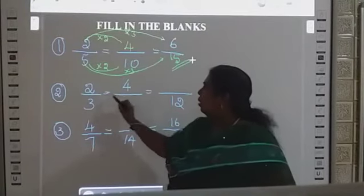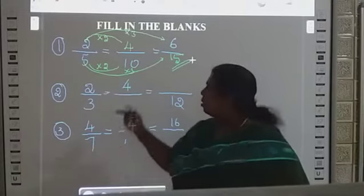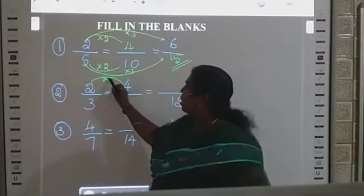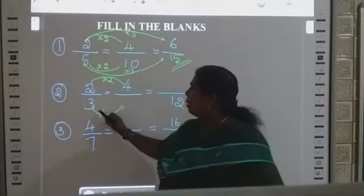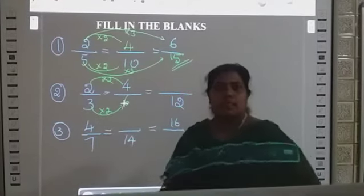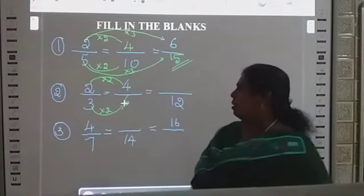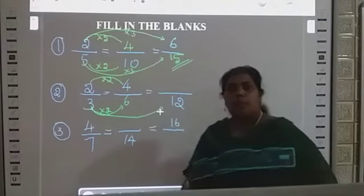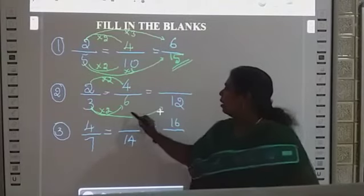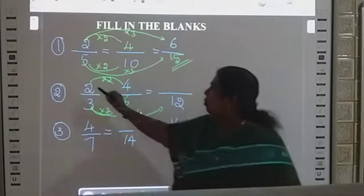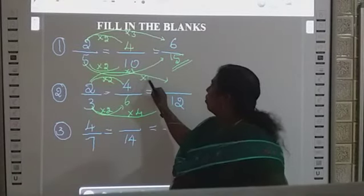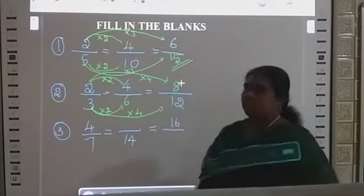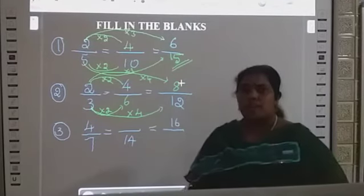Next: 2 by 3 equals 4 by dash — we don't know the denominator. Check the numerator: 2 goes into 4 two times. So multiply the denominator by 2 also: 3 times 2 is 6. Then, 3 goes into 12 four times — so multiply the numerator by 4: 2 times 4 is 8. These fractions are all equivalent.